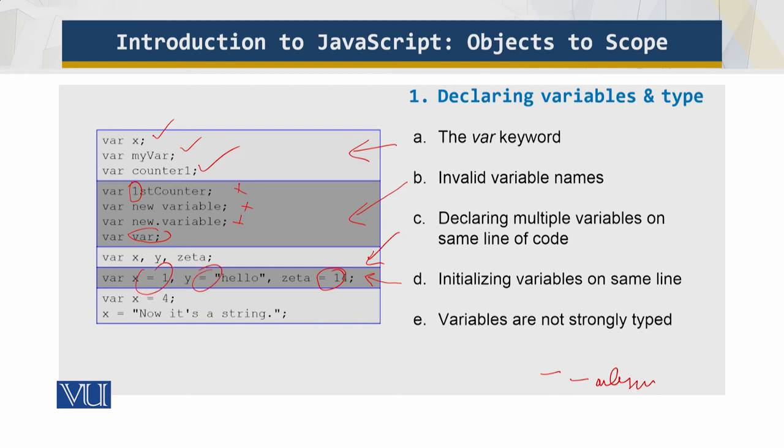Variable types. Variables in JavaScript are not strongly typed. It's not necessary to declare whether a given variable will hold an integer, a floating point number, or a string. You can also change the type of data being held within a variable through simple reassignment. Consider this example where the variable first holds an integer but then through another assignment it changes to hold a string.